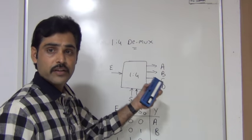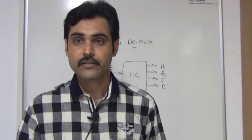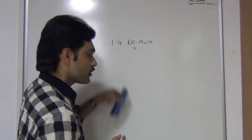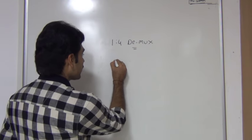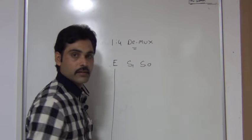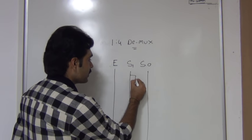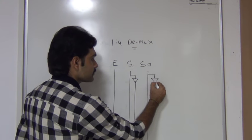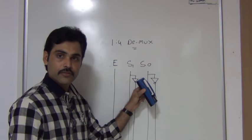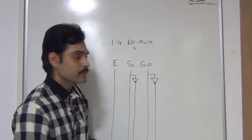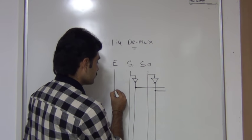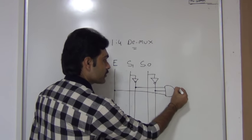Now we will see how this 1-to-4 demultiplexer can be constructed with logic gates. To construct this, first I will take input line E and 2 selection lines S1 and S0. Since S1 and S0 values are always changing, I am taking NOT gates from the selection lines. My goal is: when selection lines are at 0, 0, I should get output from A. For that, I will take S1 bar, S0 bar, and E, and connect these three things to one AND gate.